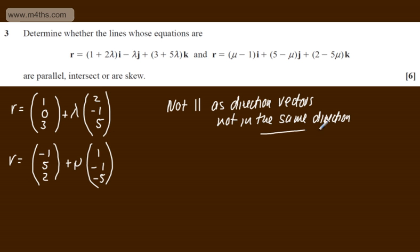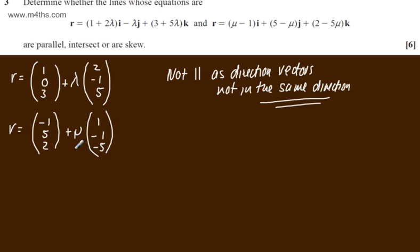So let's see now if they intersect or if they're skew. What I'm going to do is consider if the i components are equal. We can say that 1 plus 2λ will be equal to minus 1 plus 1 lot of μ.